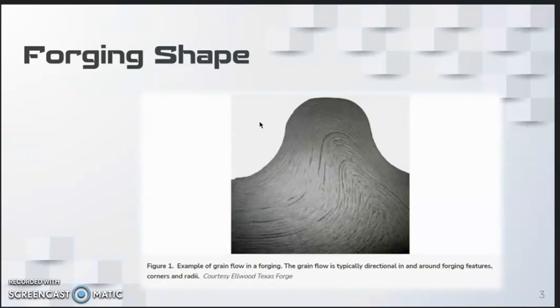Figure 1 shows an example of grain flow in a forging. In this example, there is a rib region in the upper part of the picture. During forging, the deformation dynamics are such that the metal flows up to fill this region.